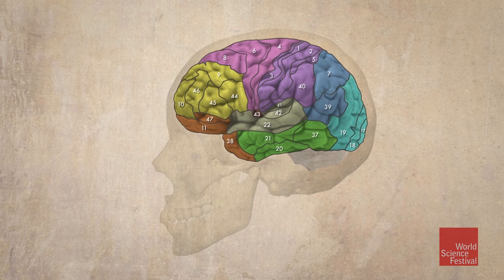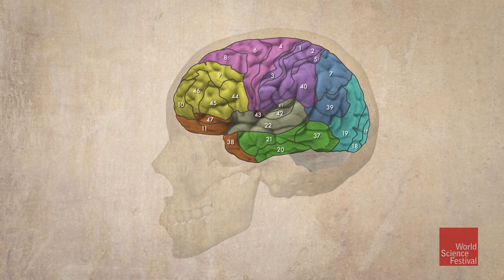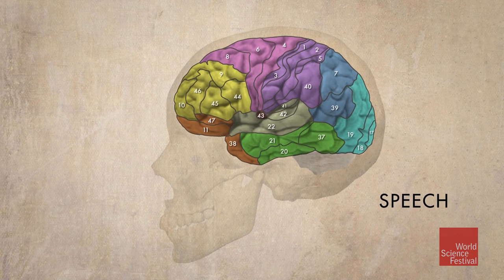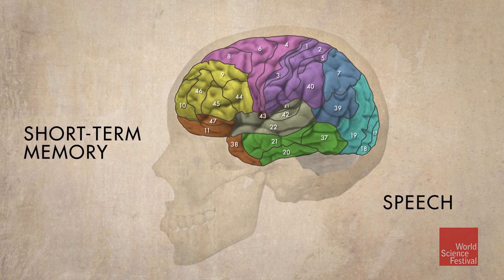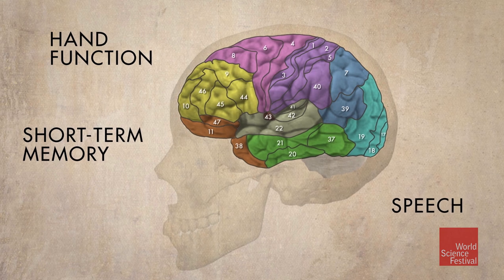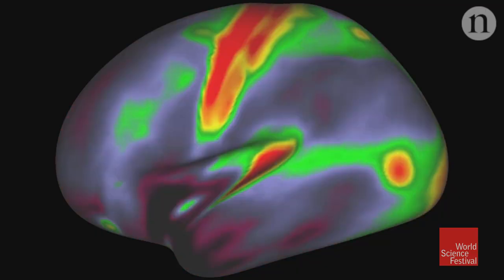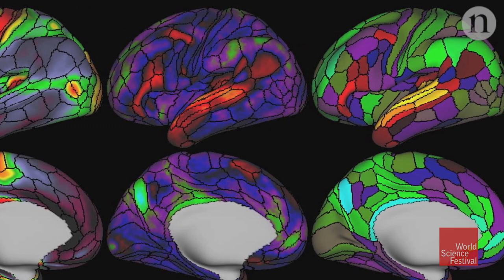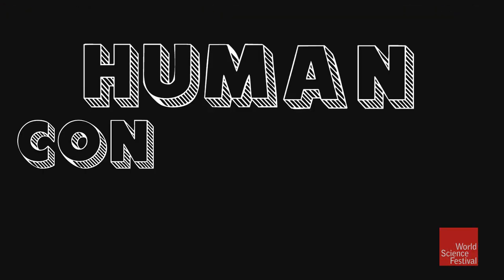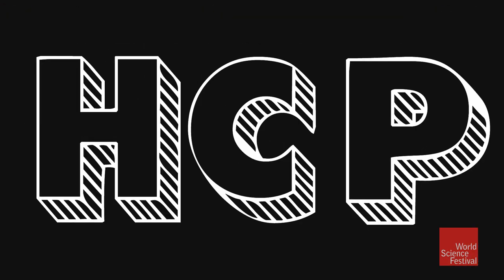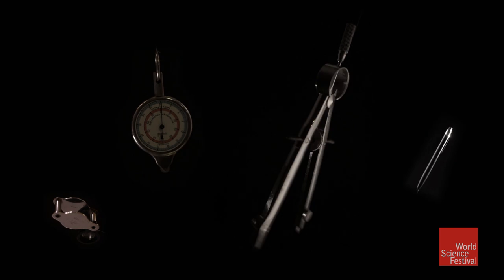The fundamental unit of brain organization for the cerebral cortex is what we call a cortical area. On the map, you could say there's a country called speech, another called short-term memory, another hand movement. Identifying every one of these cortical areas became a major objective of the Human Connectome Project, the HCP, leading the effort — a master mapmaker.